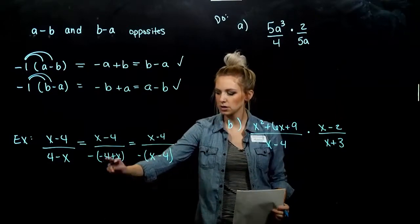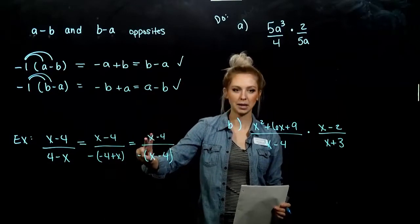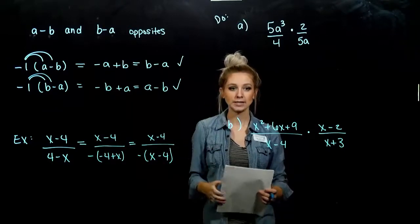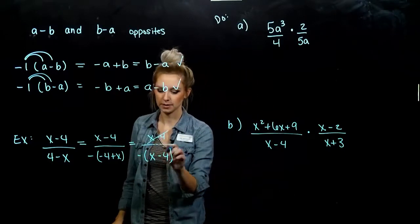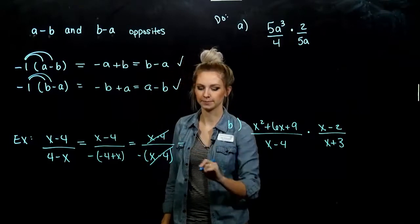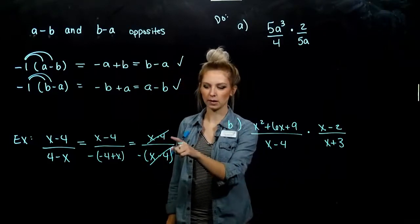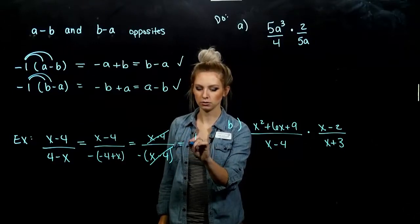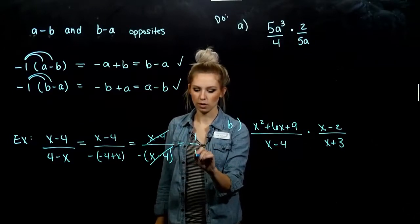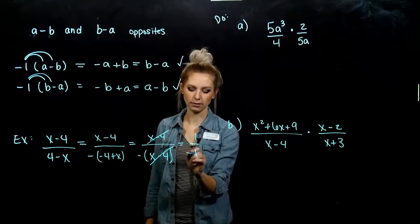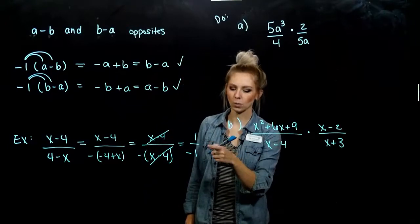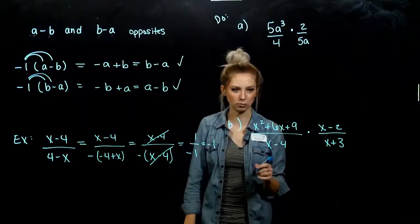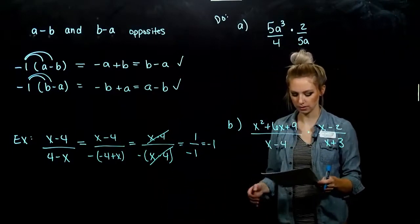Now that I've switched the order around, we can look for what's common between the top and the bottom. That matches exactly — we can take out that factor: X minus 4 over X minus 4. Same thing divided by the same thing is 1, but I have that negative out front. So 1 divided by negative 1 is negative 1. Simplified as far as we can go.